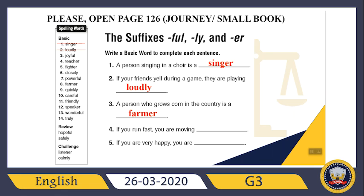A person who grows corn in the country is a farmer. What about the fourth sentence? 'If you run fast, you are moving...' — quickly. If you run really fast, you are moving quickly. What about the fifth sentence? 'If you are very happy, you are...' — joyful. Joyful is the most appropriate word for this gap.